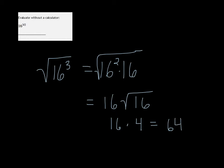You can also do it a little bit different way. Okay, so you can write it as the square root of 16 all to the 3rd power. Well, you know what the square root of 16 is, it's 4. So you have 4 cubed, which is 64.